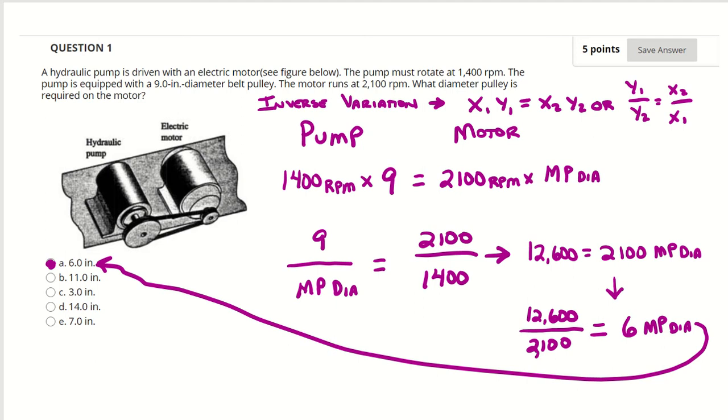Question number one on the quiz you're getting ready to take is about a hydraulic pump driven by electric motor. Motor is rotating at 1400 RPM. Pump is equipped with a 9 inch diameter pulley and the motor is running at 2100 RPMs. What is the diameter required for the motor pulley? So you know the speed of the motor, you know the speed you want on the pump and the diameter of the pulley. Now we've got to determine the diameter of the motor pulley.